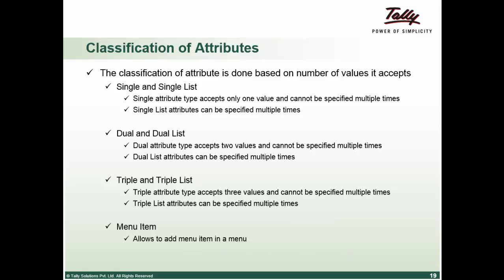Triple and triple list. Triple type accepts three values. Example, object attribute at part level: object colon ledger entries colon first colon and another value, a condition. But can be specified only once.